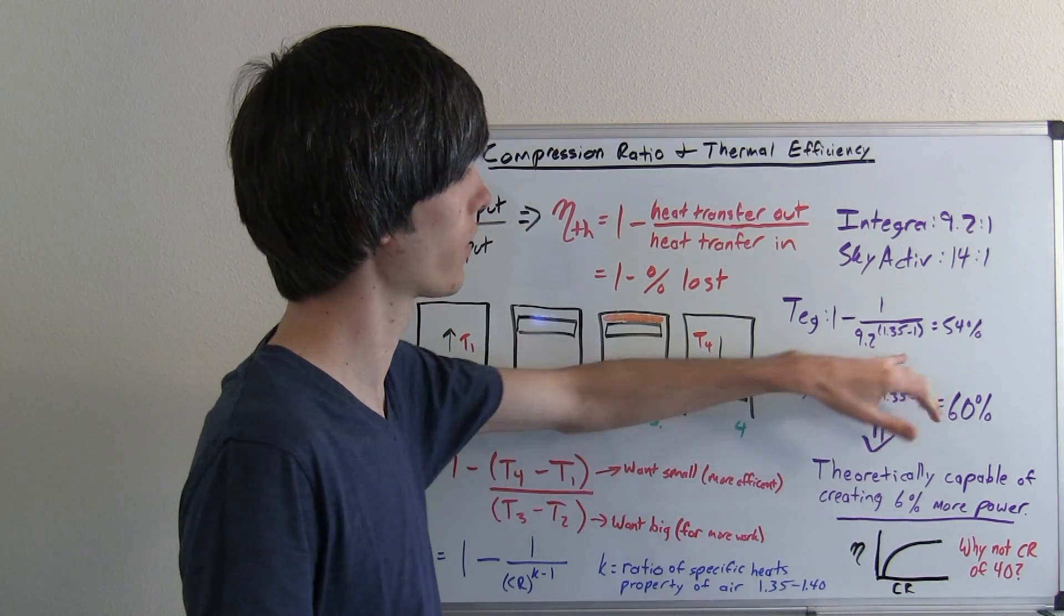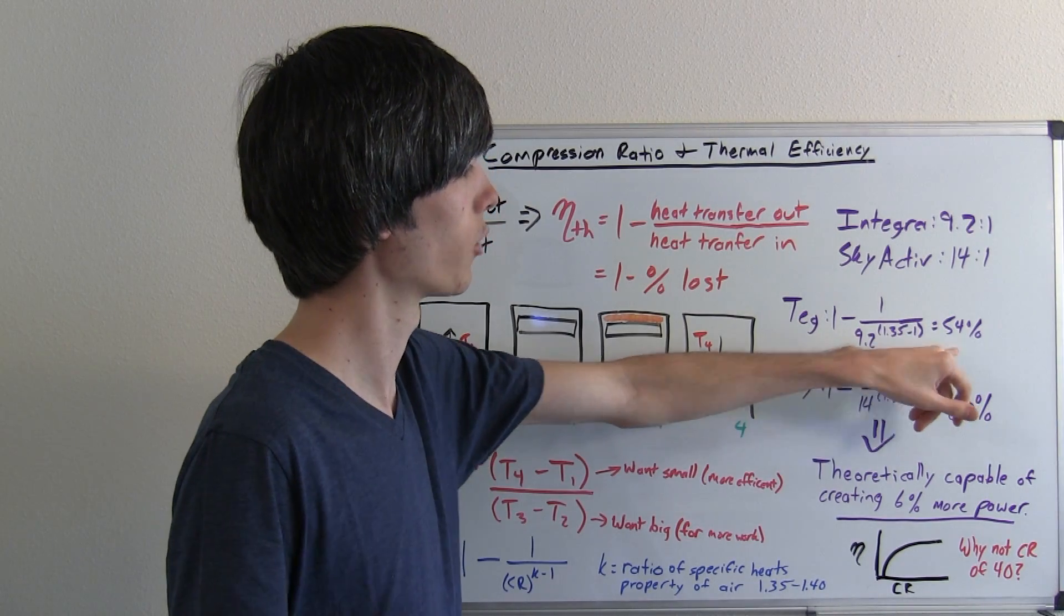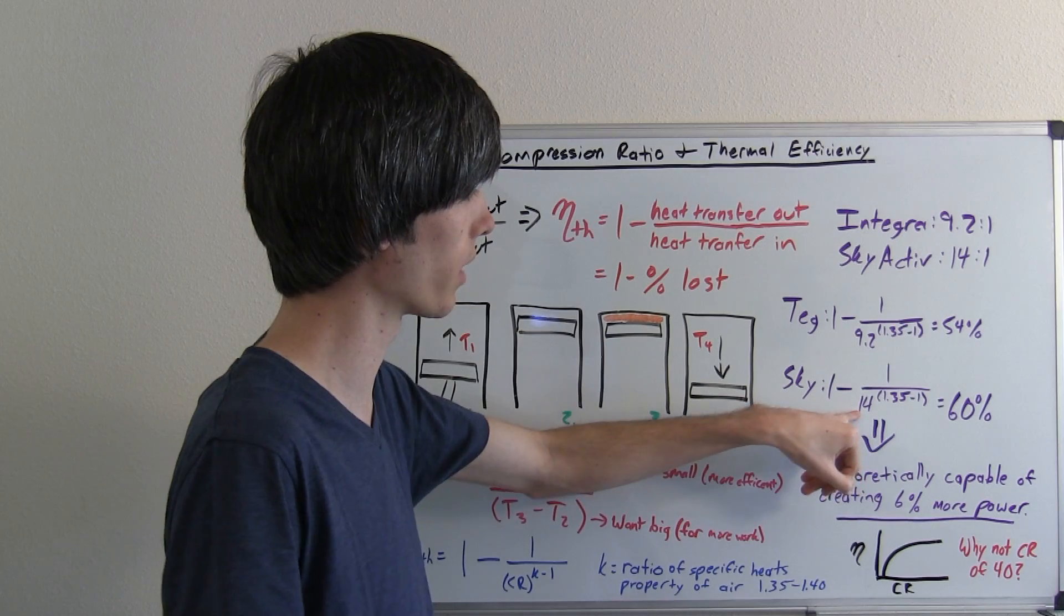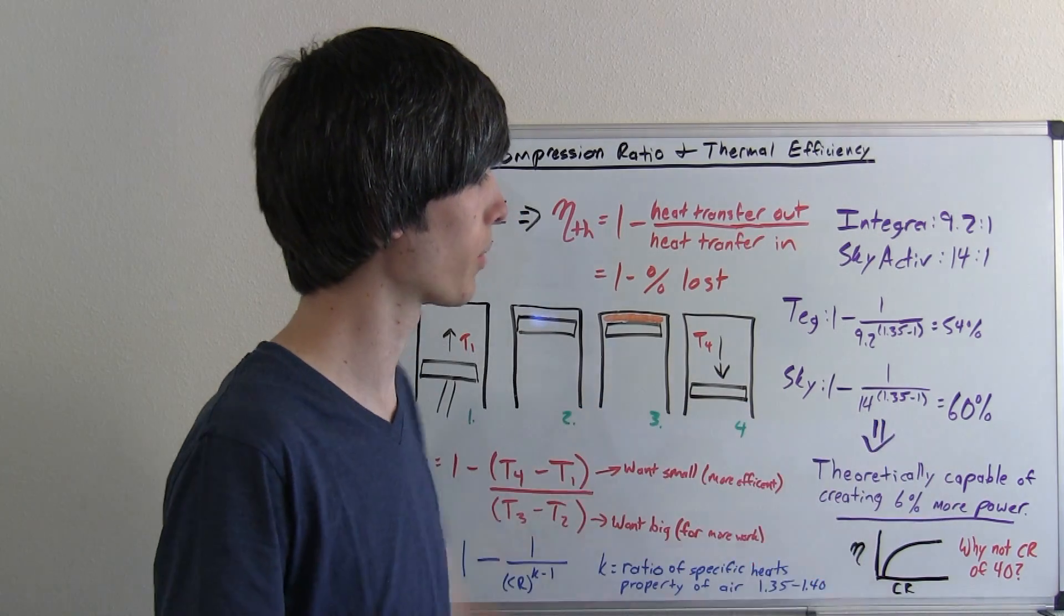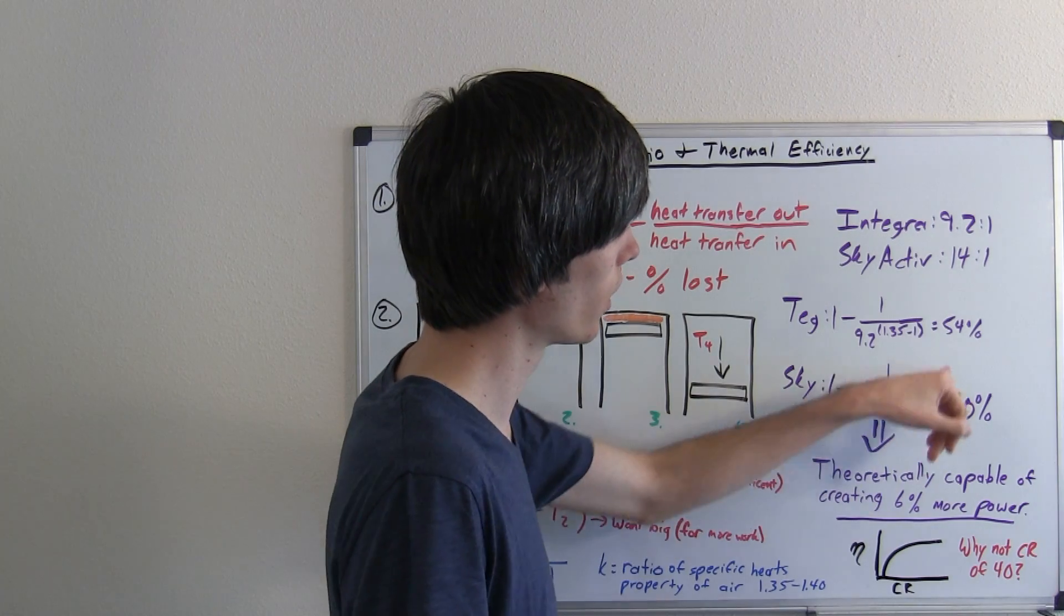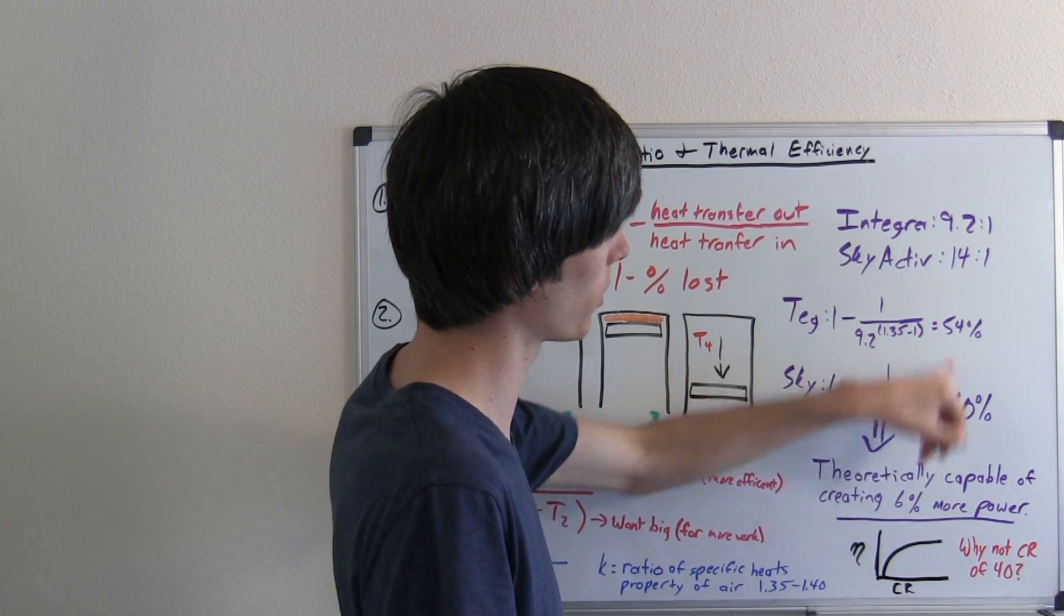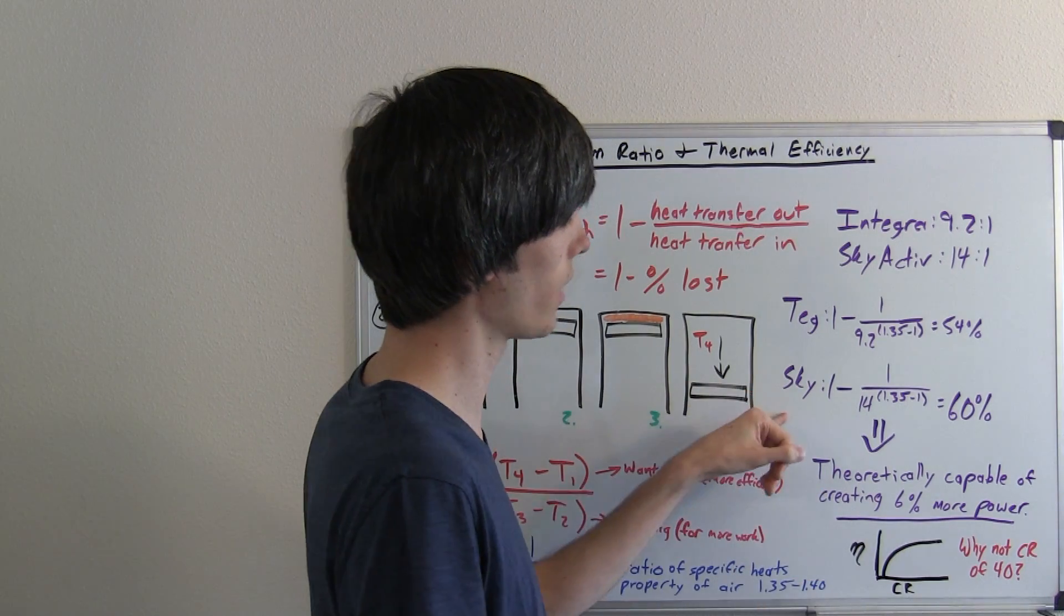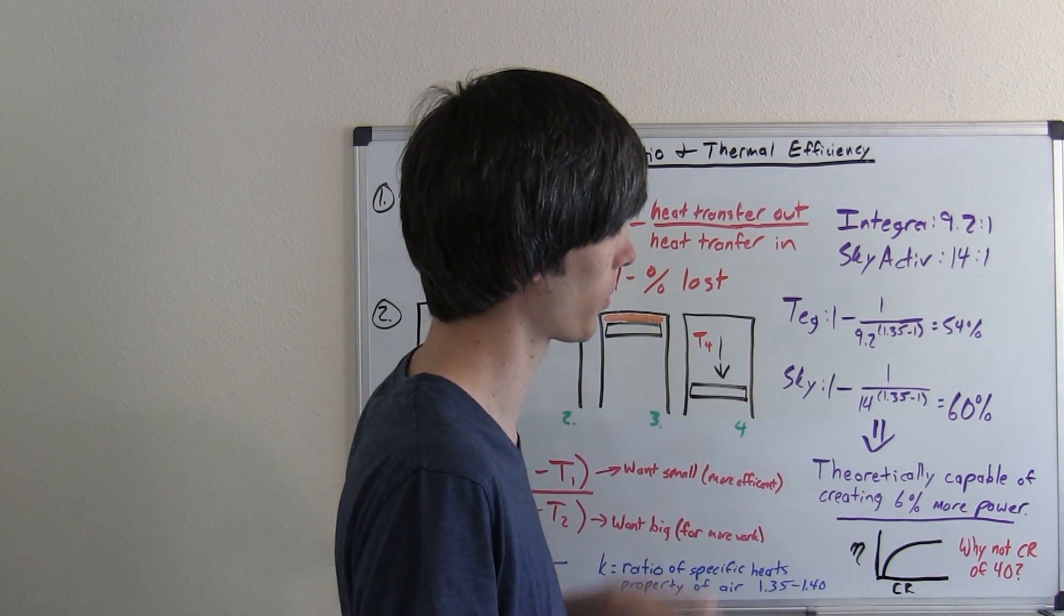So this is saying the highest thermal efficiency you could get out of this is basically 54%. The SkyActive, on the other hand, when you plug in 14 is 60%. So you can see that by having a higher compression ratio, you've increased your theoretical thermal efficiency by 6%. So theoretically this engine is capable of creating 6% more power.